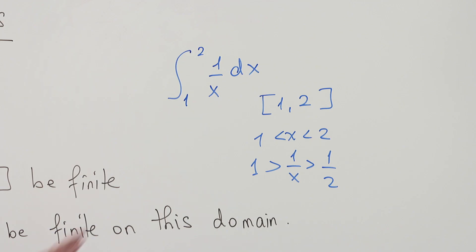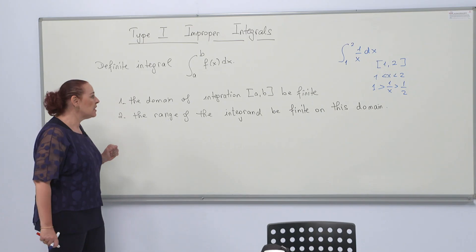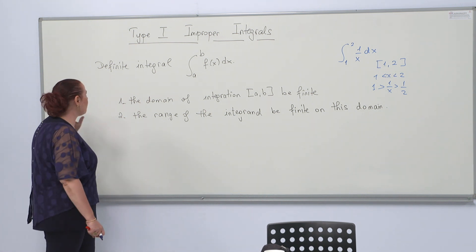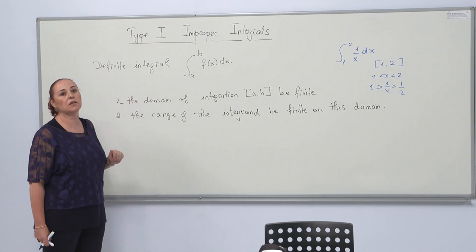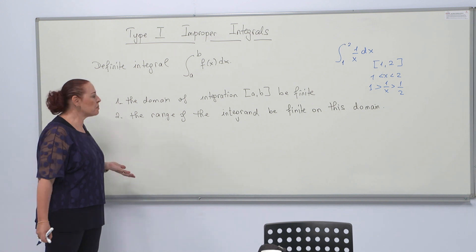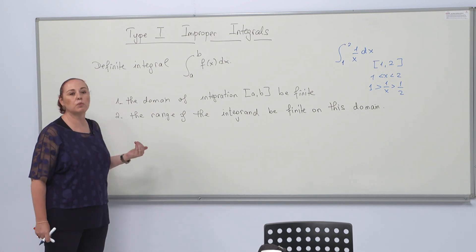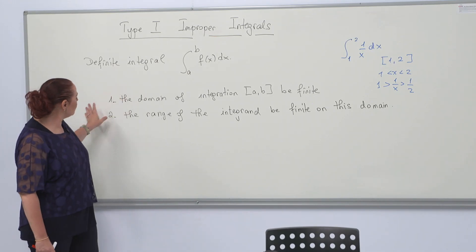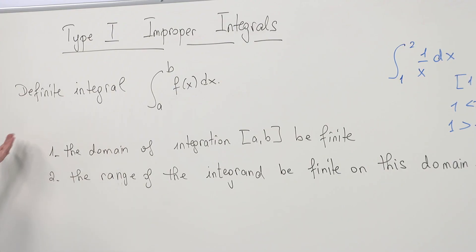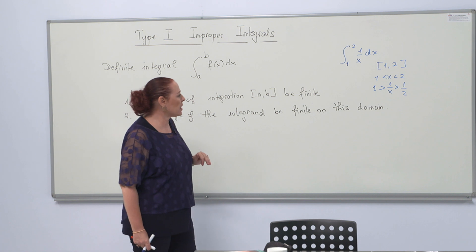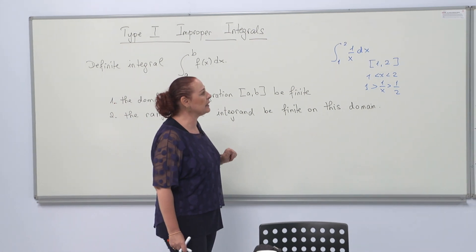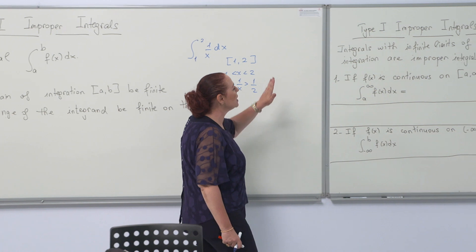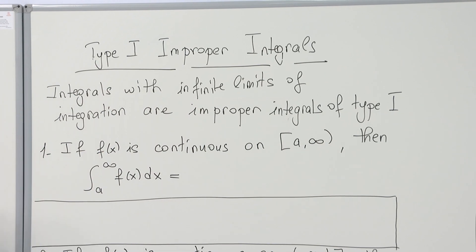In practice, we have integrals that fail one or both of these conditions, which means they are not definite integrals — we call them improper integrals. There are many different combinations of failing these two conditions, but we will just be exploring one class, which is called type 1 improper integrals.